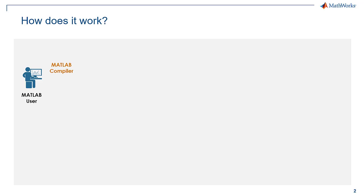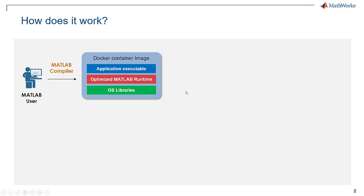How does this all work? A MATLAB user packages their standalone application using MATLAB Compiler and targets a Docker container image. This Docker container image contains several layers. The first layer contains the operating system — in this case, Linux libraries — followed by a layer with the optimized MATLAB runtime containing just the components and toolboxes that you have used in your code. And then finally, there is an application executable layer.